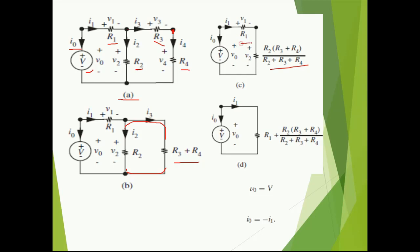Finally, R1 and this equivalent resistance value are in series with each other, so it will be an addition. The first step was to calculate the equivalent resistance, which we have now calculated. The voltage V0 across this equivalent resistance is simply the total voltage V. In actual numerical problems, all voltage and resistor values will be given so we can easily calculate the unknown variables.